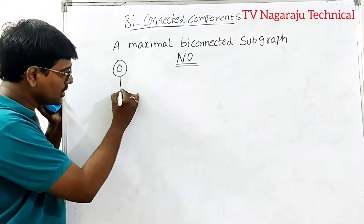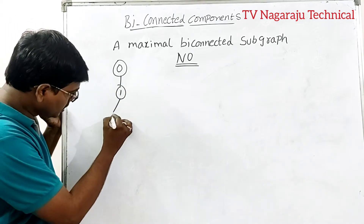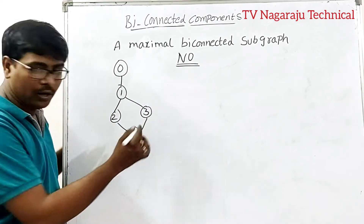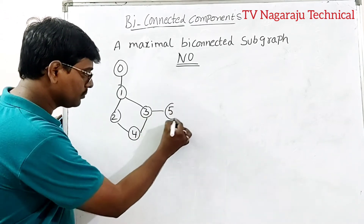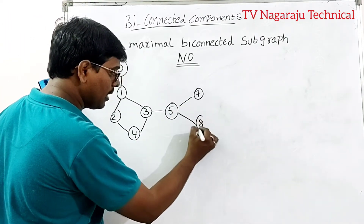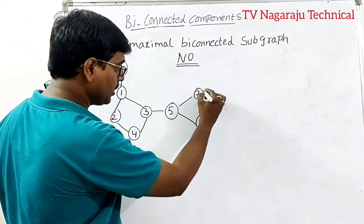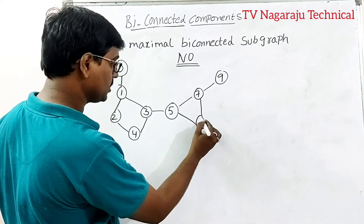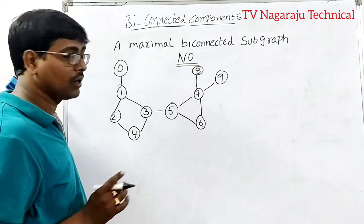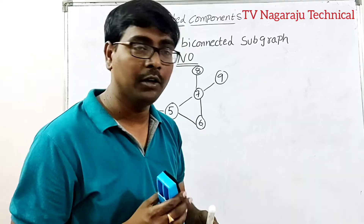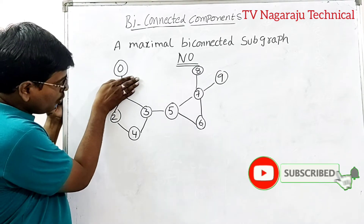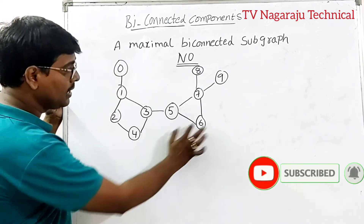Consider an example — the procedure is common for any example. Take a graph with vertices 2, 3, 4, and extend to 5 if needed. Now find out the articulation points. From this graph, we can identify which vertices, when removed, disconnect the graph.